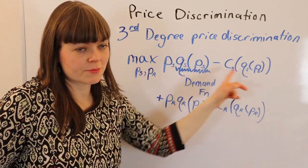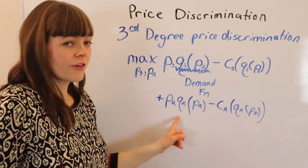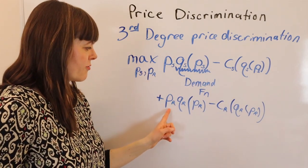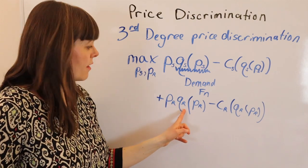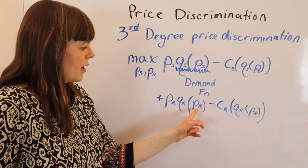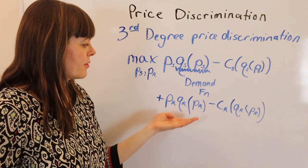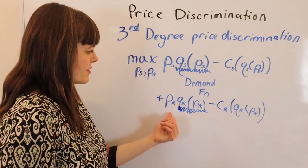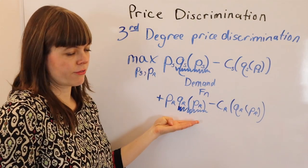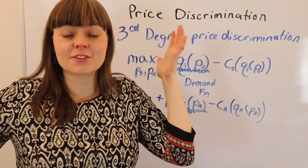Plus, this is revenue from senior citizens minus cost of senior citizens, plus revenue of regular people, which is price of regular people times quantity that you sell for regular people, which is a function of price of regular people. So this is the demand function of regular people times the price you're charging regular people, that's the revenue from regular people, minus the cost of regular people. So that is literally it.